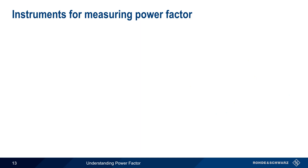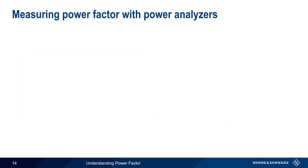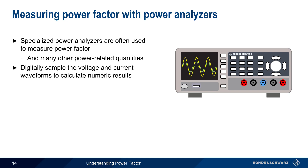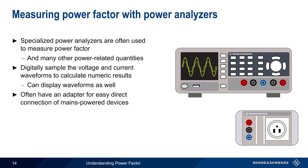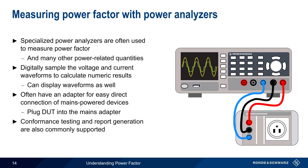Two categories of instruments are used for measuring power factor: power analyzers and oscilloscopes. As the name implies, power analyzers are specialized instruments that can be used to measure power factor as well as many other power-related quantities. These instruments digitally sample both the voltage and current waveforms in order to calculate numerical results. In most cases, power analyzers can also display the voltage and current waveforms, making it easy to visually determine whether displacement and/or distortion are occurring. Typically, a power analyzer has a special adapter for easy connection of mains-powered devices. The device under test is simply plugged into the mains adapter, which is then connected to the analyzer by a series of cables. Power analyzers also commonly support more advanced features for testing conformance to various standards, as well as generation of reports.